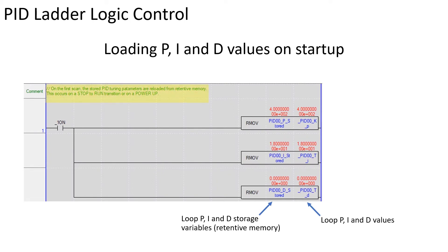On a stop to run transition or power cycle, the first scan bit enables the stored PID values to be loaded into the operational loop variables.